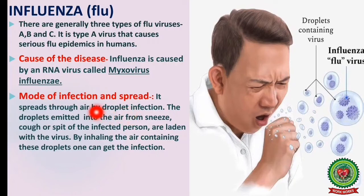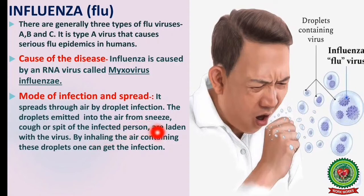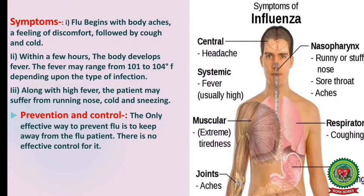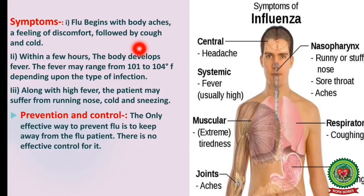The mode of infection: influenza spreads through air by droplet infection. The droplets emitted into the air from a sneeze, cough, or spit of an infected person are laden with the virus. By inhaling the air containing these droplets, one can get the infection. Flu begins with body aches and a feeling of discomfort, followed by cough and cold.